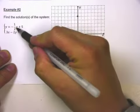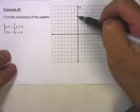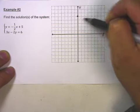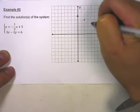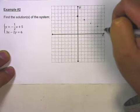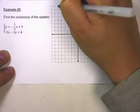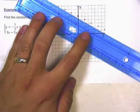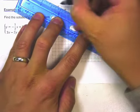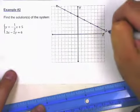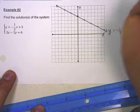And then our slope is negative one-half. So to find my next point, I'm going to go down one and to the right two. Down one to the right two. Or I could go up one and to the left two. So let me graph that line. So this is the equation y equals negative one-half x plus 5.